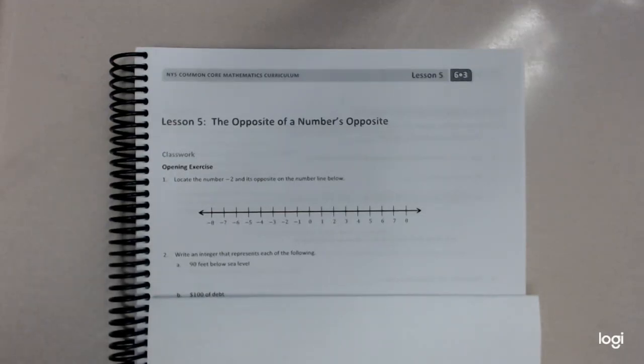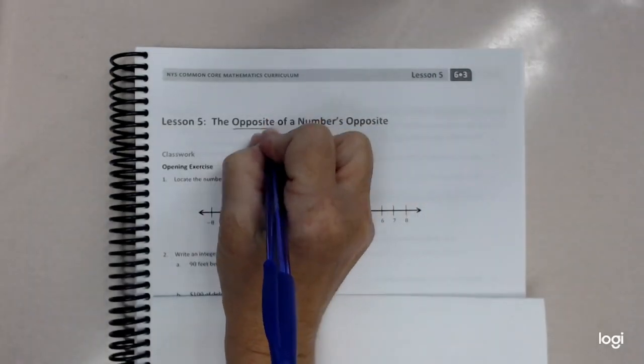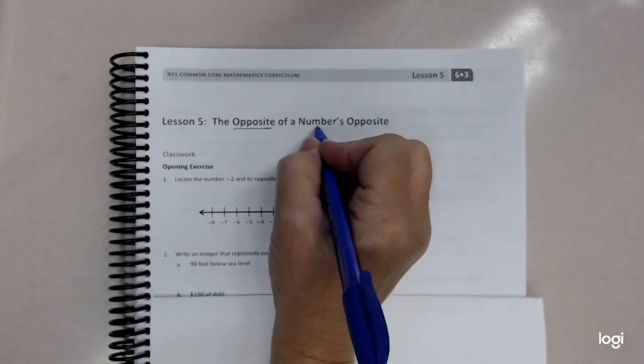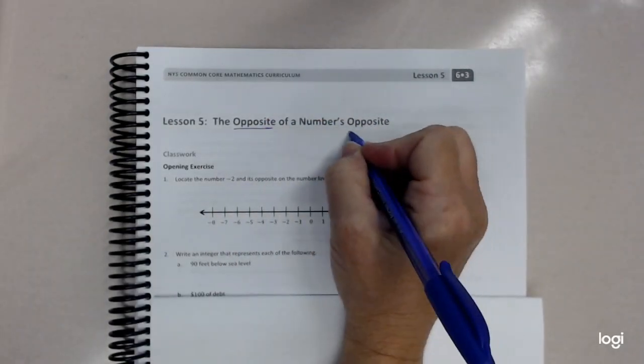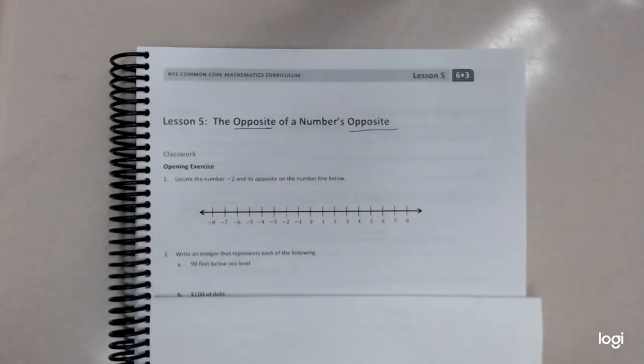Today we are on lesson five. We are still dealing with positive and negative numbers on a number line, and we're going to look at what we call the opposite of a number's opposite.